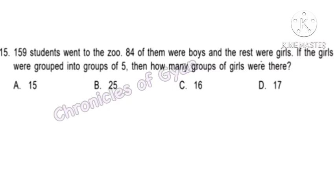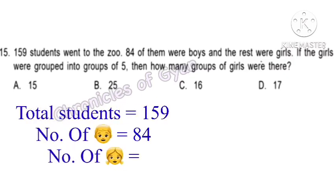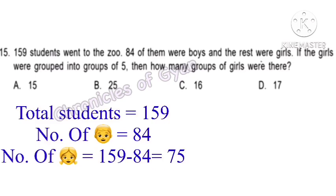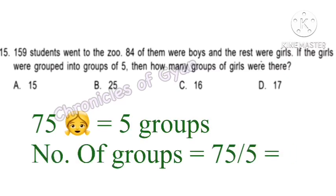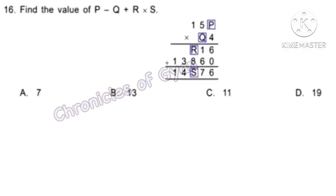Question 15. 159 students went to the zoo — 84 were boys and the rest were girls. If the girls were grouped into groups of 5, how many groups were there? Number of girls: 159 minus 84 equals 75. Total groups: 75 divided by 5 equals 15. Option A — 15 groups of girls.